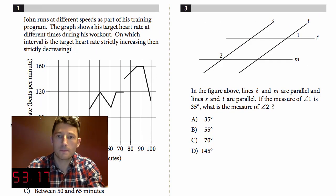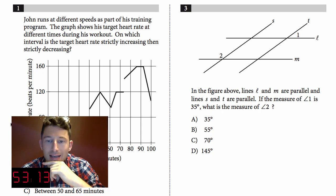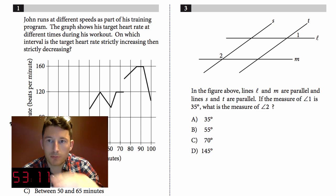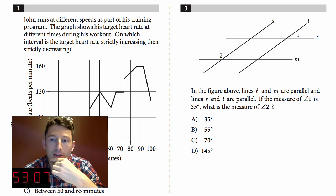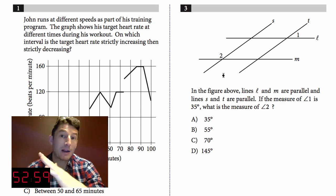Number three: In the figure above, lines l and m are parallel and lines s and t are parallel. Both opposite pairs of lines are parallel. If the measure of angle one is 35 degrees, what is the measure of angle two?